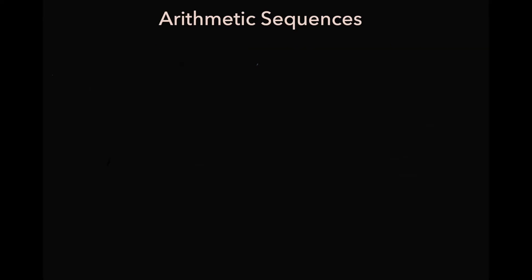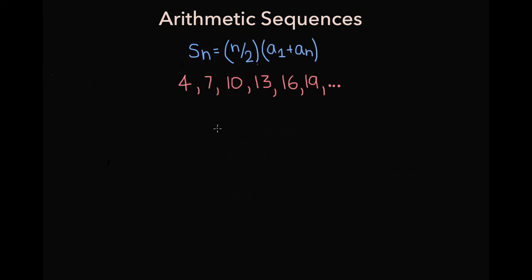The last topic is how to find the sum of the first n terms in an arithmetic sequence. The formula for the sum, s sub n, is n over 2 times (a1 plus a sub n). Consider the arithmetic series 4, 7, 10, 13, 16, 19, and let's find the sum of the first six terms, s sub 6. We'll use the formula to better understand why it works.